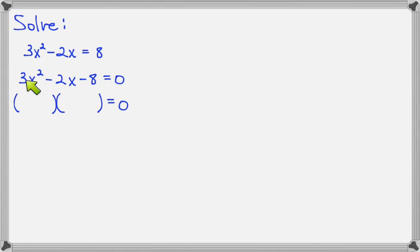First times first has to equal 3x squared. So that's 3x times 1x. The signs need to be different. And last times last needs to make 8. So I'm thinking a good place to start is to see if 4 times 2 will work. So let's check outer plus inner. I'm getting 6x minus 4x, which is positive 2x. But I need negative 2x, so I'm going to swap the signs. And now just make sure negative 6x plus 4x does make negative 2x. So this factoring is correct.